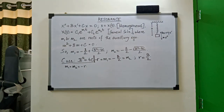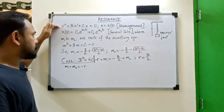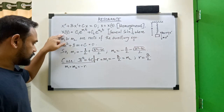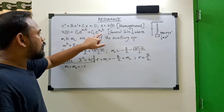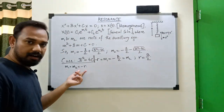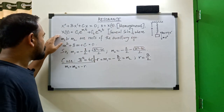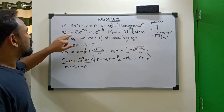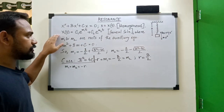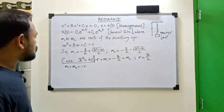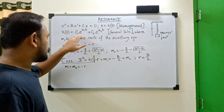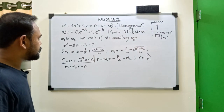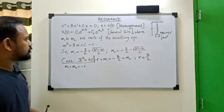Now if someone asks you to solve this differential equation in the case of resonance, the inclination is to simply replace m1 and m2 by −r in the general solution. But we have to look more closely, because we need to check whether that really gives a valid general solution. To do that, we also need to investigate what the constants c1 and c2 actually are.